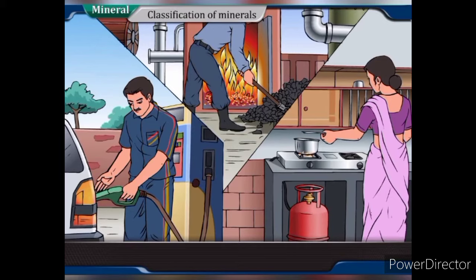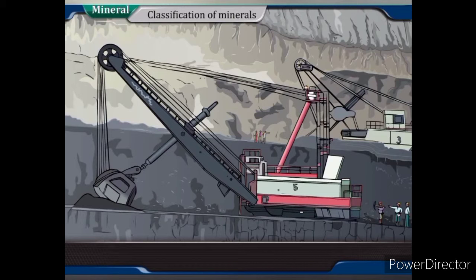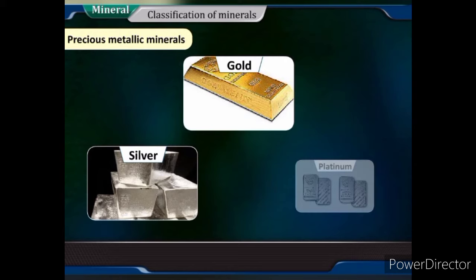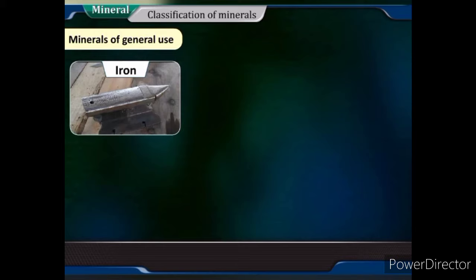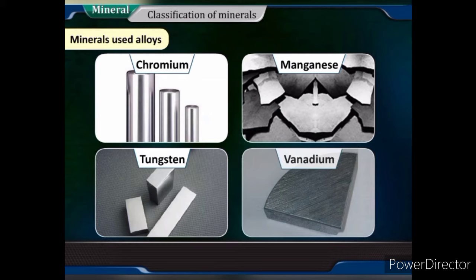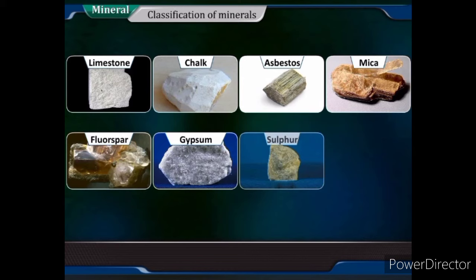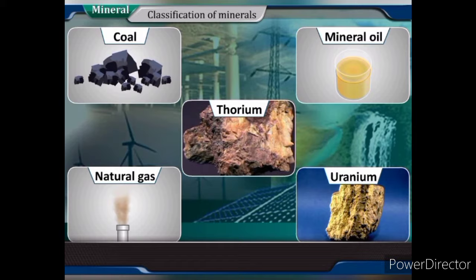Classification of Minerals: About 200 minerals are used directly or indirectly in our routine life. A general classification is as follows — Metallic Minerals: Precious metallic minerals (gold, silver, platinum, etc.); Light metallic minerals (magnesium, bauxite, titanium, etc.); Minerals of general use (iron, copper, lead, zinc, tin, nickel, etc.); Minerals used in alloys (chromium, manganese, tungsten, vanadium, etc.). Non-metallic Minerals include limestone, chalk, asbestos, mica, feldspar, gypsum, sulfur, diamond, etc. Energy Resources include coal, mineral oil and natural gas, uranium, thorium, etc.